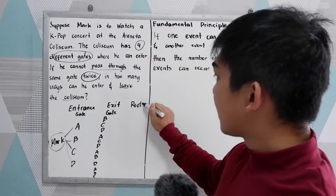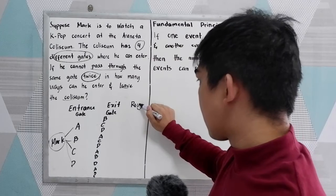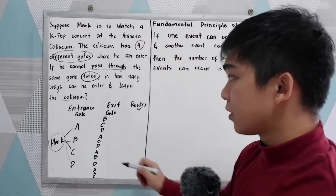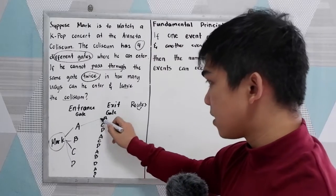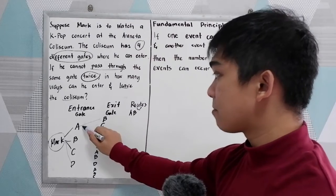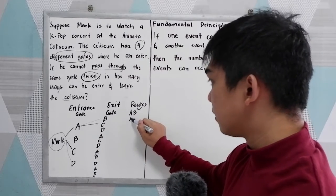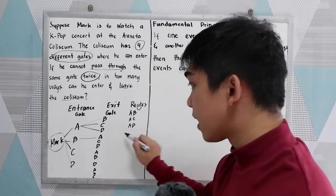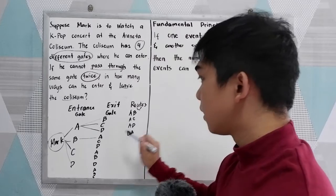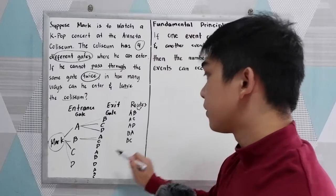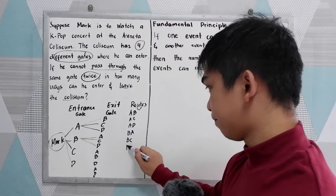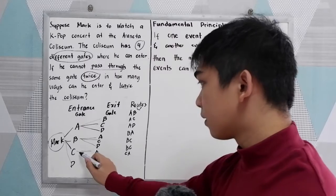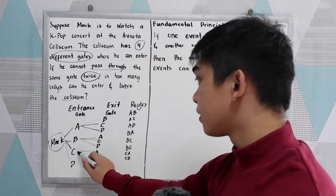Now let us list all the possible routes of Mark. It can be A-B, A-C, A-D, B-A, B-C, B-D, C-A, C-B, or C-D.